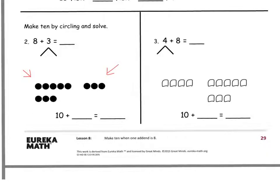We need to break up this 3 so that we can make a 10. So you're going to circle to make a 10. We move 2 over with 8 and now we have 10. We have 1 left over.